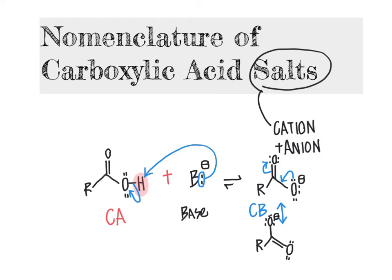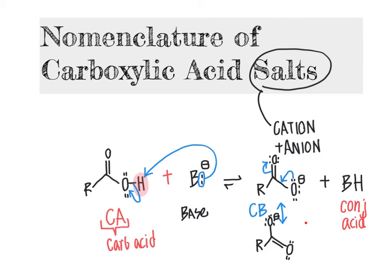That results in our conjugate base. The conjugate acid product is formed by the base bonding with the proton it took from the carboxylic acid. To be clear, on the left-hand side of the equation, "CA" means carboxylic acid — not conjugate acid. So what we are naming when we talk about carboxylic acid salts is that conjugate base product from this reaction, as well as any cation associated with it.